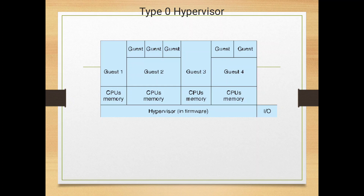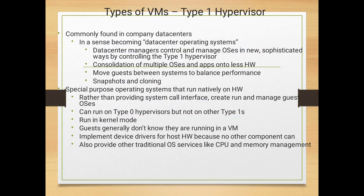The Type 0 hierarchical structure may have guests 1, 2, 3, and 4, each using a separate CPU for their processes. The next type is the Type 1 hypervisor.